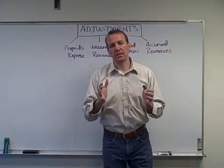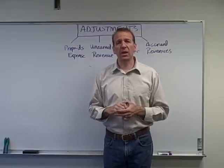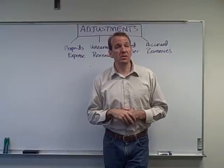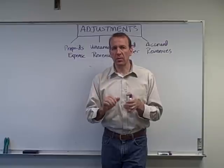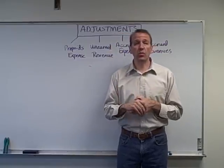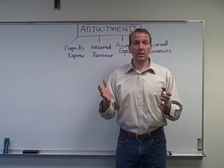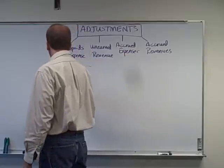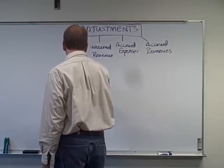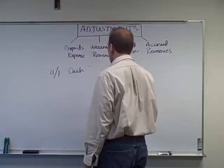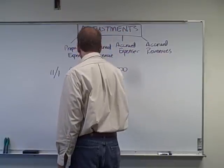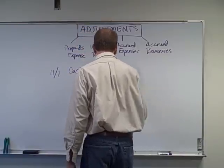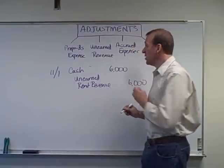So let's say that we have a new office space and we're going to rent it out. Let's say we're going to rent it for $1,000 a month, and it's November 1st and someone comes to us and says they want to rent this. We say you need to pay us six months worth of rent up front, and they agree. So it's $1,000 per month for six months. On November 1st, we get the cash of $6,000.